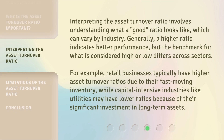Interpreting the Asset Turnover Ratio involves understanding what a good ratio looks like, which can vary by industry. Generally, a higher ratio indicates better performance, but the benchmark for what is considered high or low differs across sectors. For example, retail businesses typically have higher asset turnover ratios due to their fast-moving inventory, while capital-intensive industries like utilities may have lower ratios because of their significant investment in long-term assets.